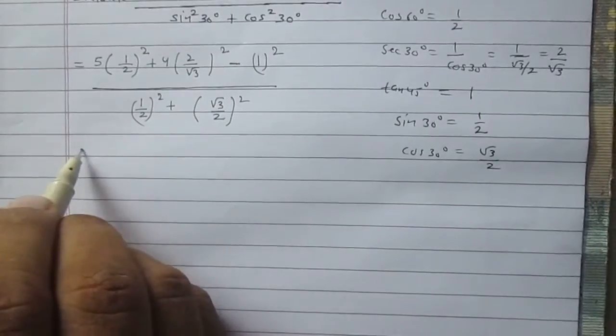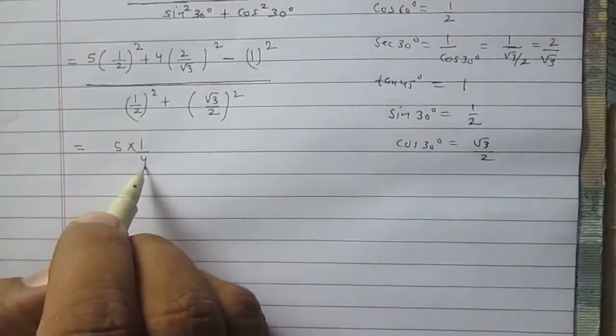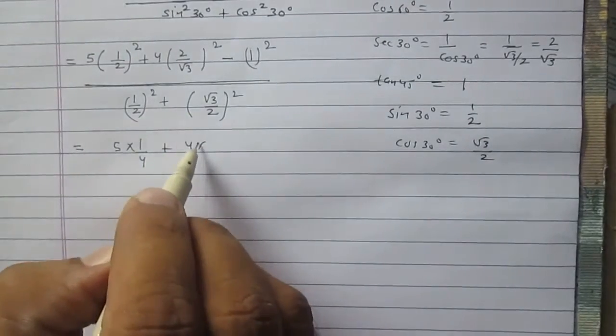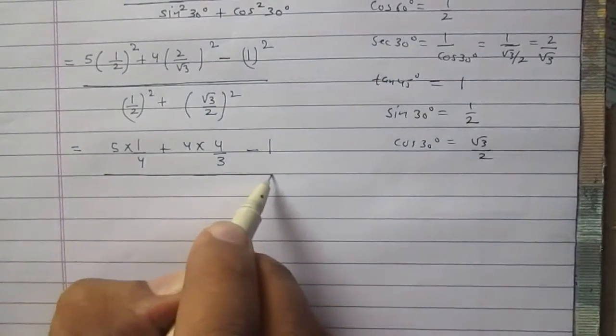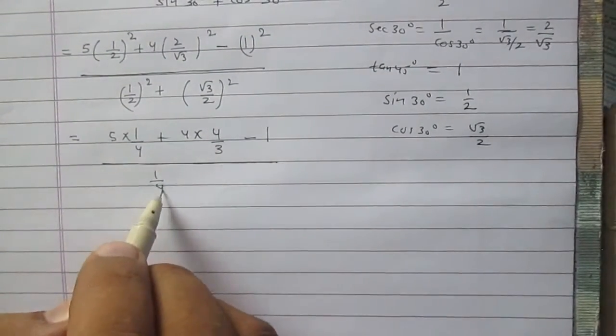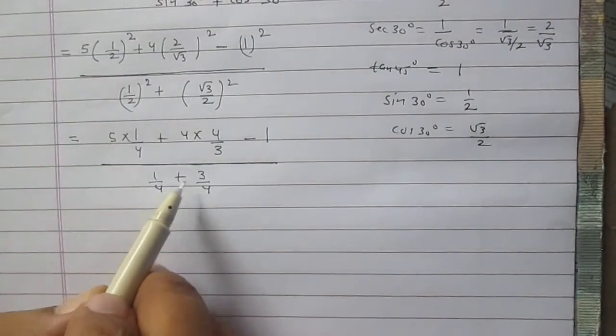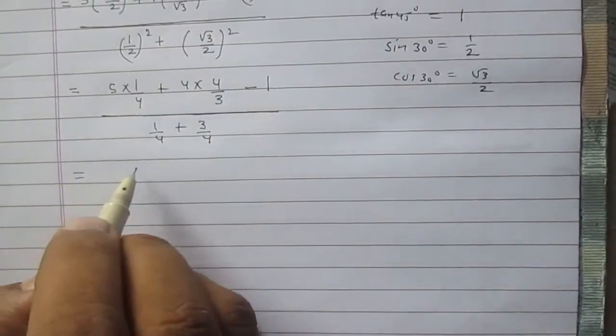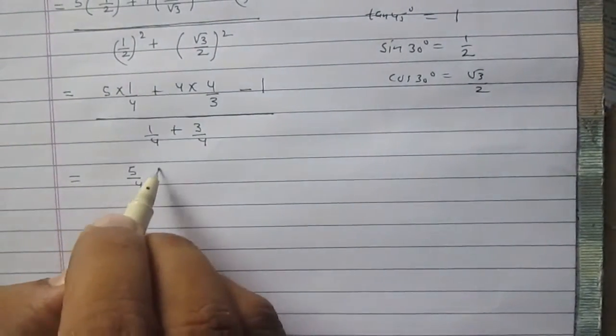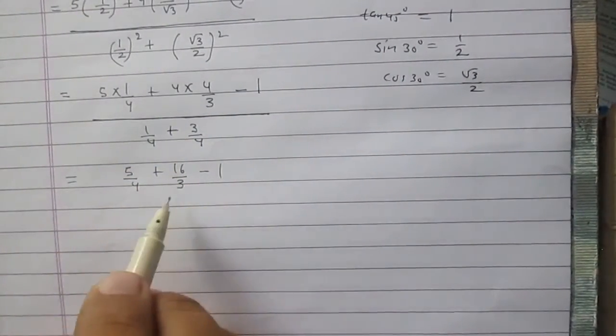So the numerator is 5 multiplied by 1 by 4, then 4 multiplied by 4 upon 3, then minus 1. In the denominator you will have 1 upon 4 plus 3 upon 4, which is 1. So in the numerator you will have 5 upon 4 plus 16 upon 3, then minus 1.